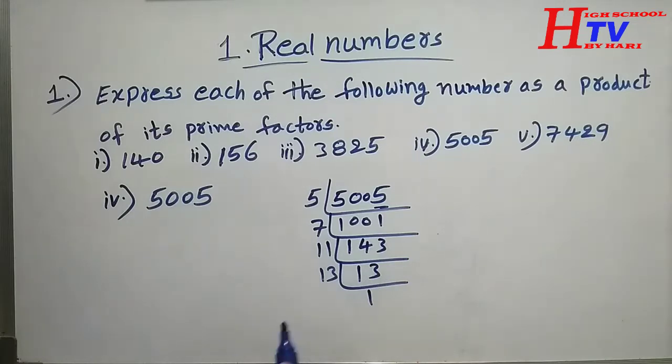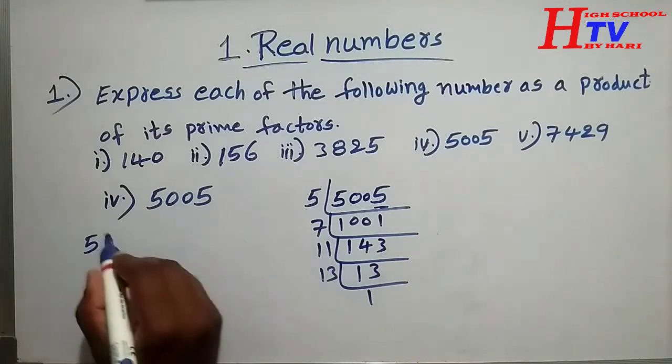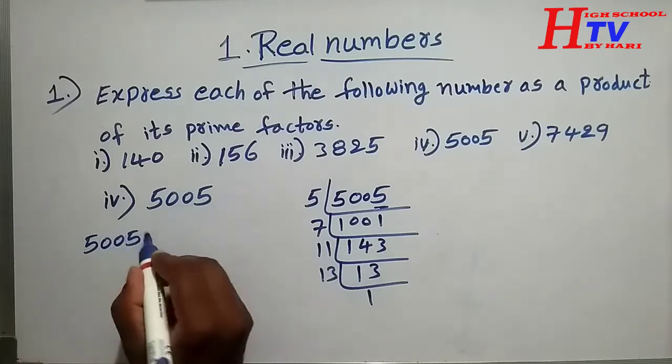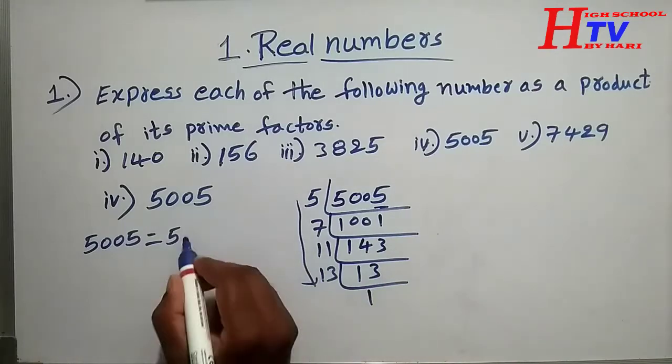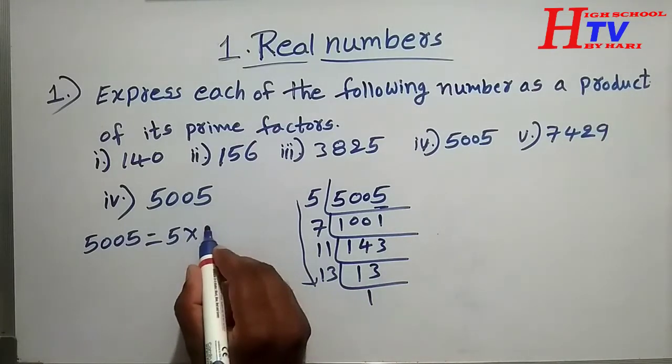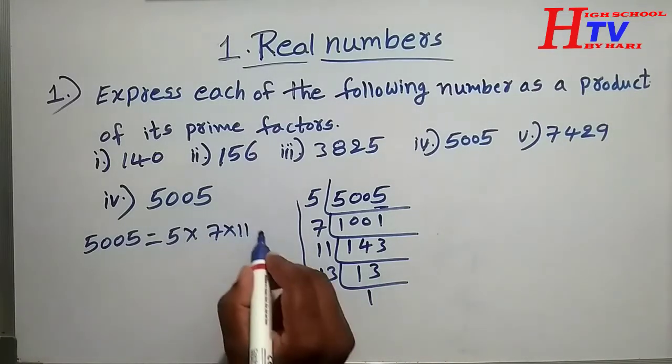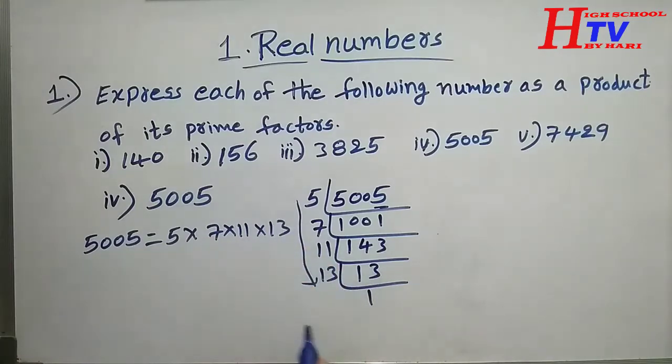Two thirteen, because that is a prime number. Five thousand five equals these are the prime factors: five into seven into eleven into thirteen.